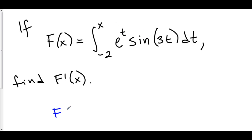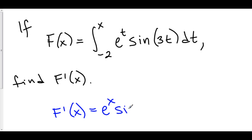So F prime of x is equal to e to the x sine of 3x. And that's all we need to do — done. Let's go to the next one.